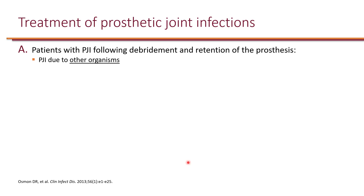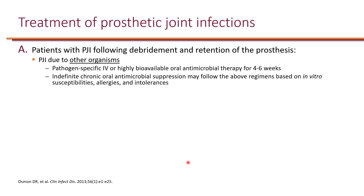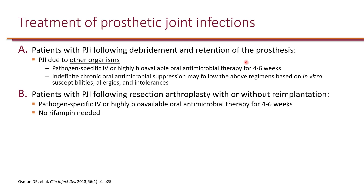For prosthetic joint infection due to organisms other than staphylococcus, it does not have to be IV therapy — it can be IV or highly bioavailable oral antimicrobial therapy for four to six weeks based on culture results. If the patient receives resection arthroplasty with or without reimplantation, the source of infection is removed along with all biofilm. For these patients, rifampin is not needed because there is no biofilm after resection. Pathogen-specific IV or highly bioavailable oral antimicrobial therapy is needed for four to six weeks.